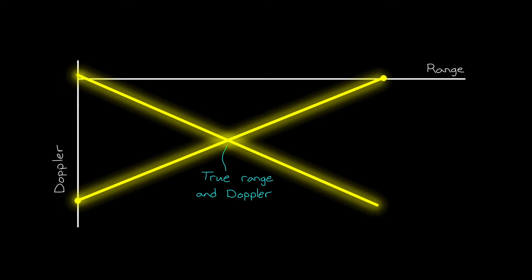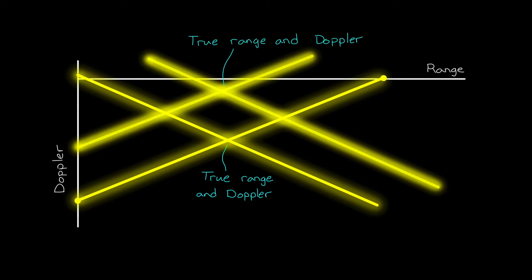If we go back to the range and velocity plot, this is equivalent to two X's centered over the real range and velocity of the two objects, one line for each beat frequency. Unfortunately, when we do this, we're actually left with four intersections, or four potential objects and no clear way to distinguish which are the two real ones and which are two ghost objects.